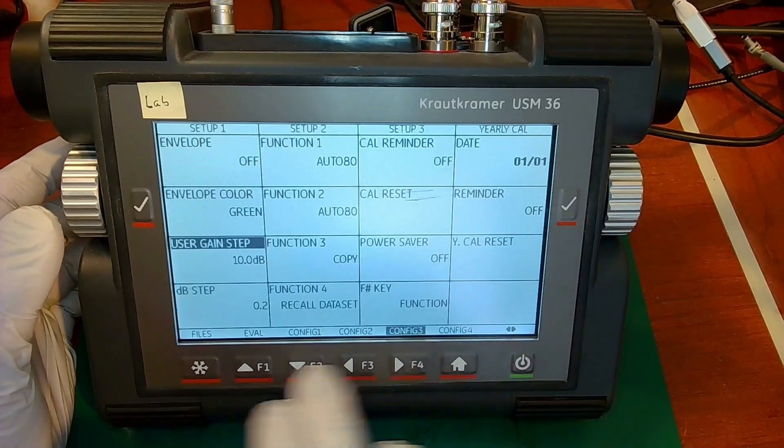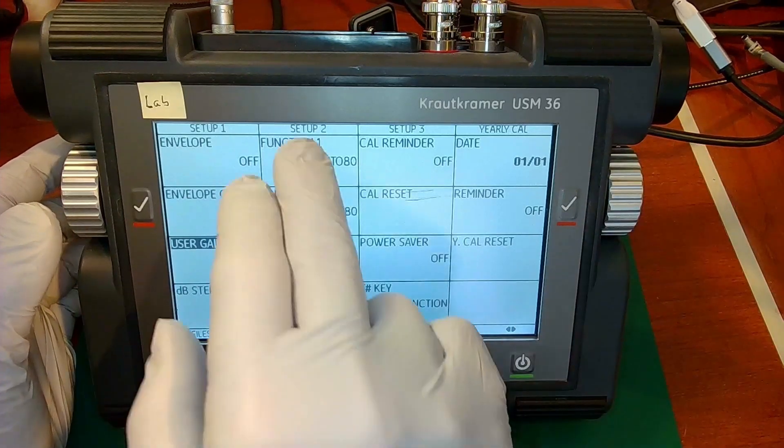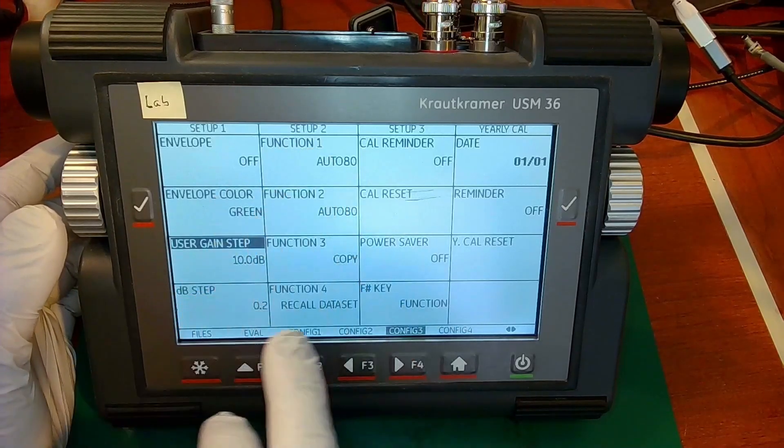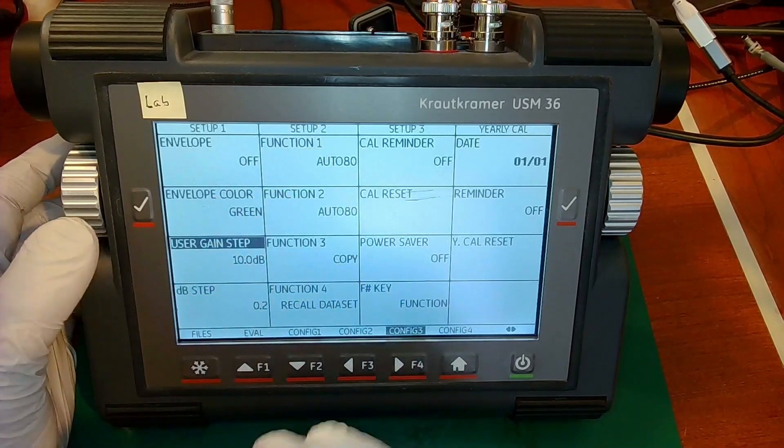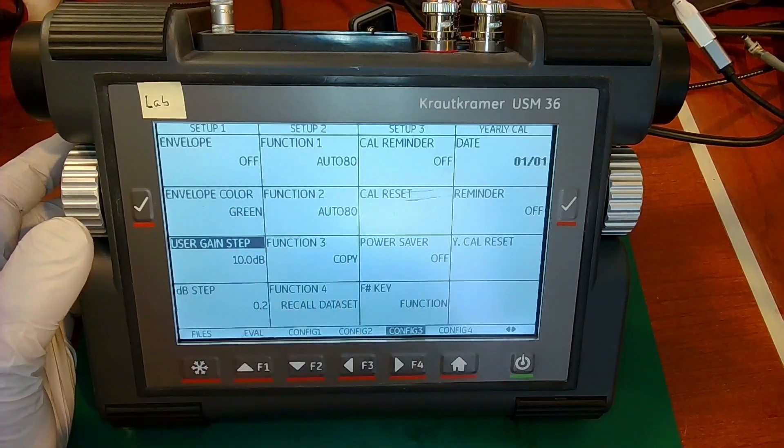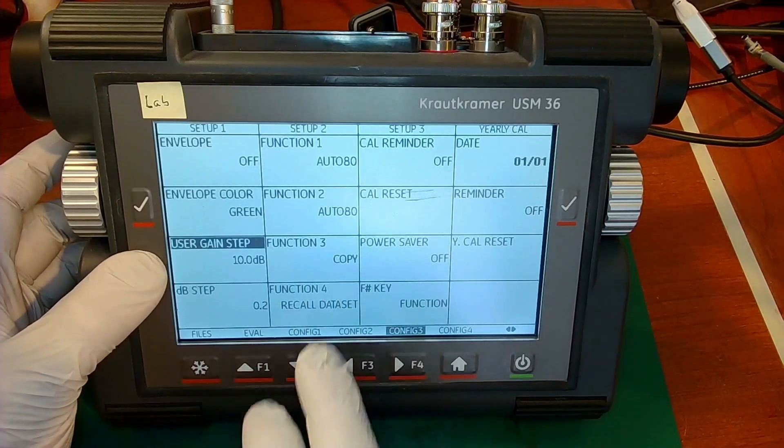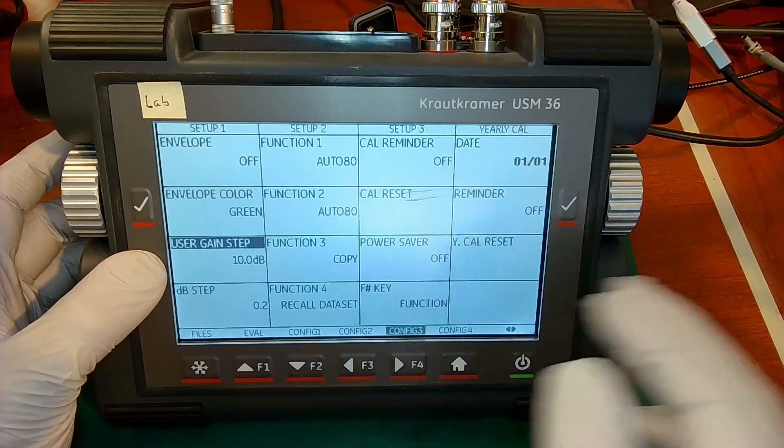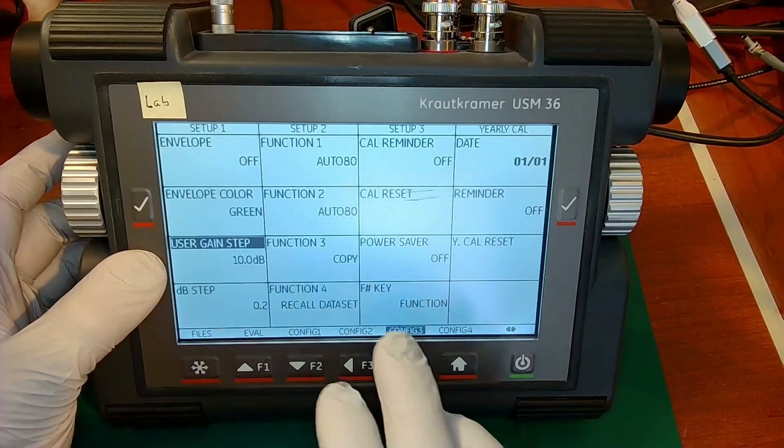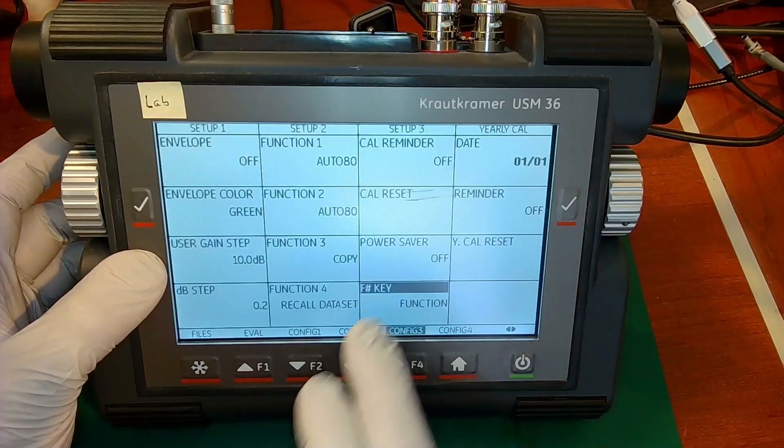Now we talked about these function keys a little bit. If we go to config three, there are four function keys here. You can select what function you want it to activate when you hit a particular function key. Copy is used to save data sets. You can recall data. There are a whole range of functions that you can choose from here. There's one more parameter that controls that. That is the function key here.